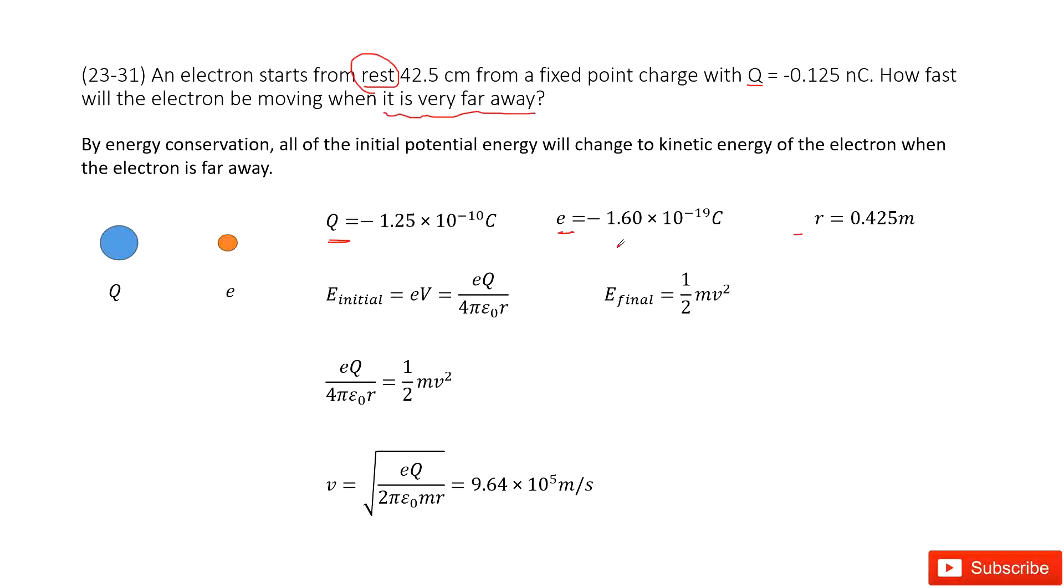So we can get the initial energy as the potential energy: the electron charge times the potential at this position. Where does this potential come from? It comes from this fixed point charge.